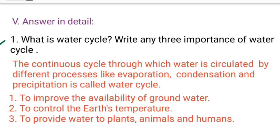Answer in detail. First one: what is the water cycle? Write any three importances of the water cycle. The continuous cycle through which water is circulated by different processes like evaporation, condensation, and precipitation is called the water cycle. Its importance: to improve the availability of ground water; to control the earth's temperature; and to provide water to plants, animals, and humans.